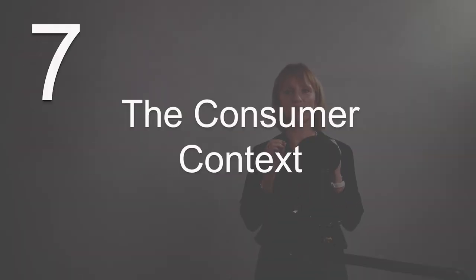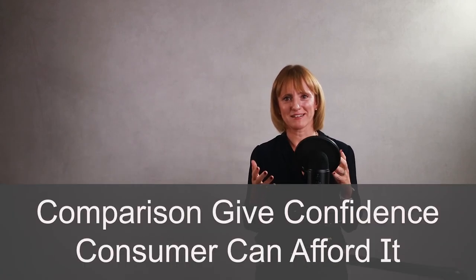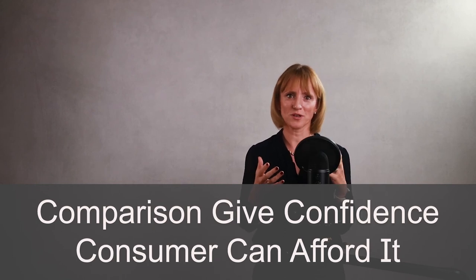Now the final and seventh secret for how to increase the price of your product successfully is to provide a favorable context for the customer. There are different ways to provide a favorable context, such as framing your increase against something big so your product price increase looks proportionally smaller. An example might be the increased spend on your product per year compared to the cost of purchasing a cup of coffee each day for a year, something like that. This type of comparison will give you confidence that your customer can afford it, but will also help you demonstrate the insignificance of the increase should you need to.